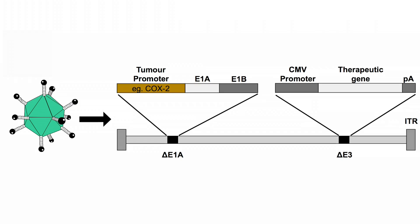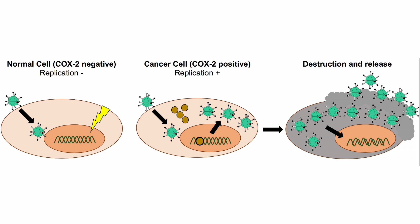An example of this is the cyclooxygenase 2 enzyme, commonly known as COX2, which is overexpressed and found in really high levels in numerous tumour types. Insertion of the COX2 promoter into the viral genome ensures that viral replication will only take place in cells where there are high levels of this COX2 enzyme. This means that viral replication can only proceed in tumour cells but is restricted in healthy cells.